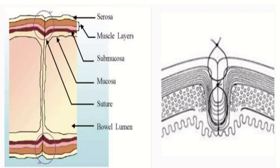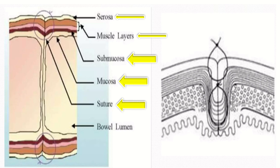While doing bowel repair, it is very important to know about its anatomy. The layers are the serosal layer, the muscular layer, the submucosa, and the mucosa — and here we have the suture line and the bowel lumen.